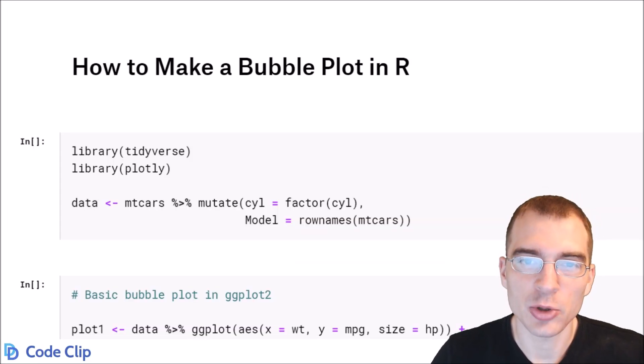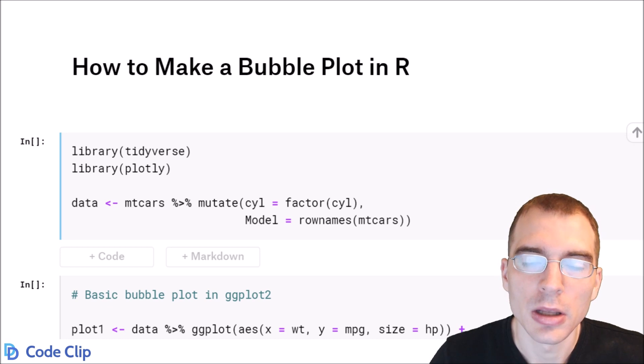In this video we're going to learn how to make a bubble plot in R. Now a bubble plot is essentially just a scatter plot that has a third numeric variable mapped to a size aesthetic so that the size of the points that appear are sized according to that third variable.